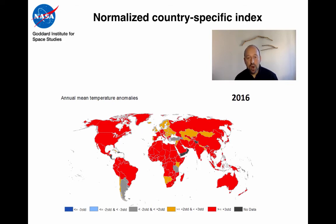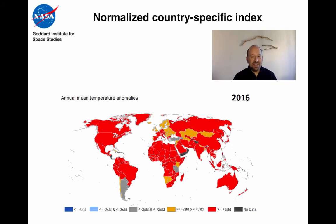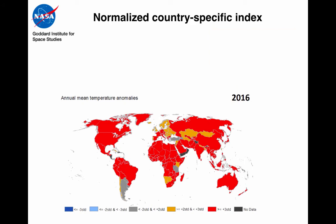2017 won't be quite as warm as this — it will probably be the second warmest year on record. But this dataset will allow people to go into their regions and their countries to see exactly how things are going based on this global estimate.